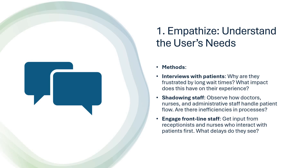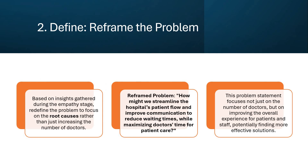Second is shadowing staff — observe how doctors, nurses, and admin staff handle the patient flow. Are there inefficiencies in the process? You may have to sit in the hospital for a day or so and observe the entire flow. You also need to engage the frontline staff: get inputs from the receptionist, nurses, and caretakers who interact with patients first. What delays do they see? From their perspective, they may give you fantastic inputs helpful for finding a solution.